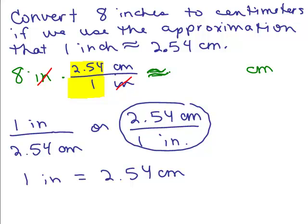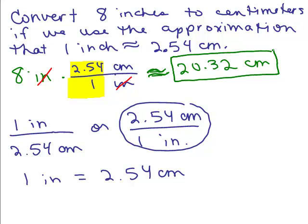So now we just have to do 8 times 2.54, which is 20.32 centimeters. Now a problem may ask you to round to a certain place and if so then of course you would do that. But in this case, we'll just leave it.